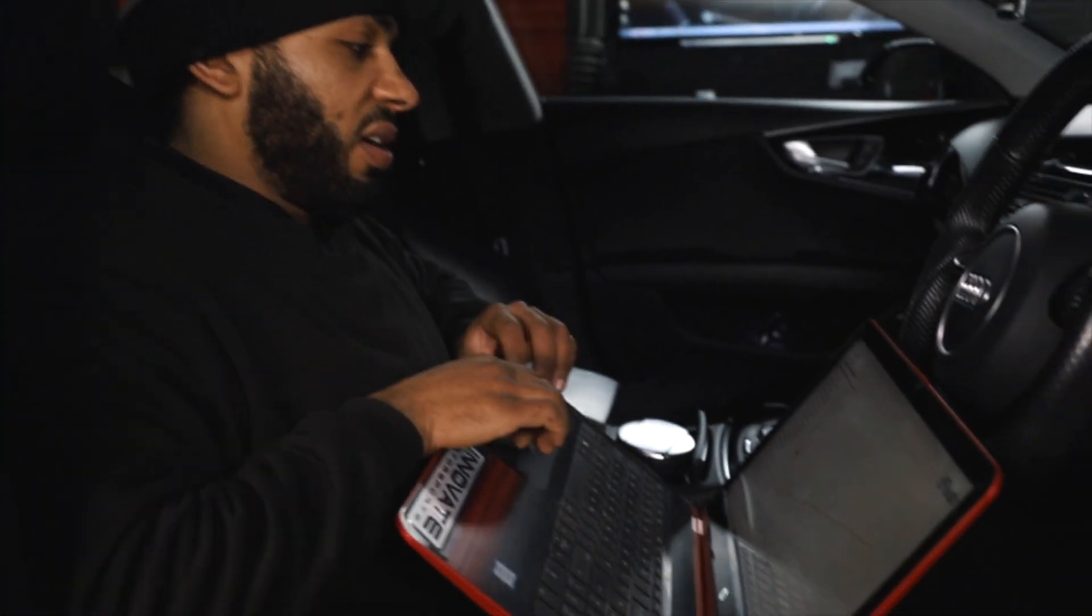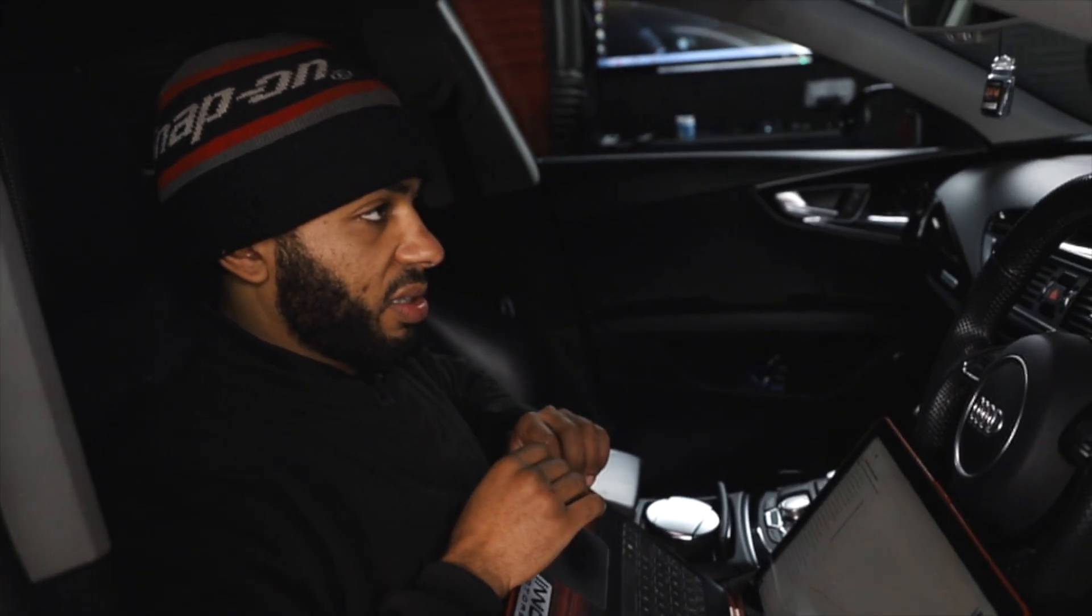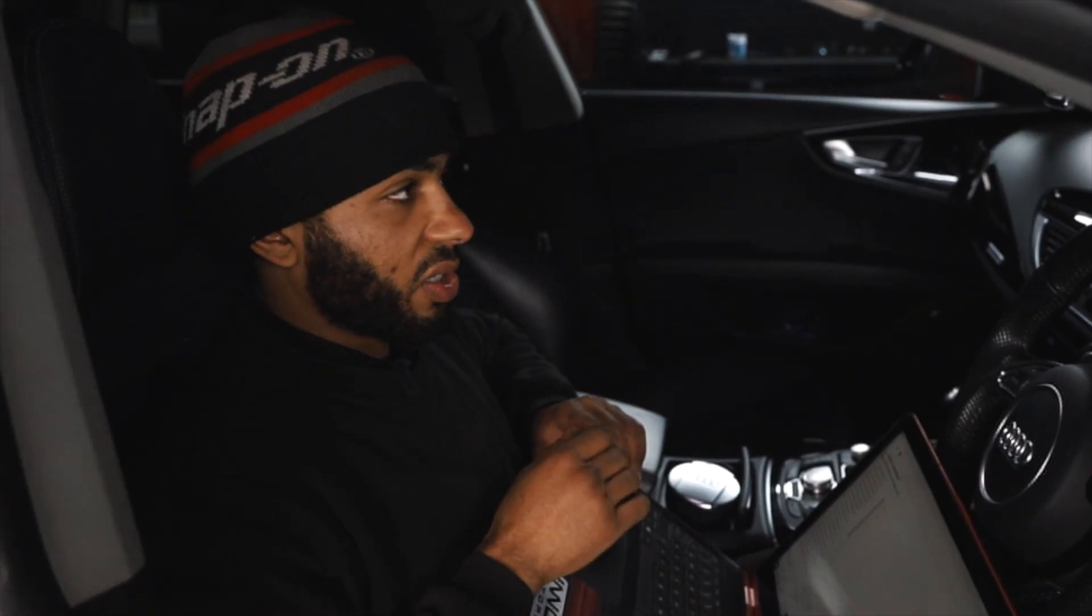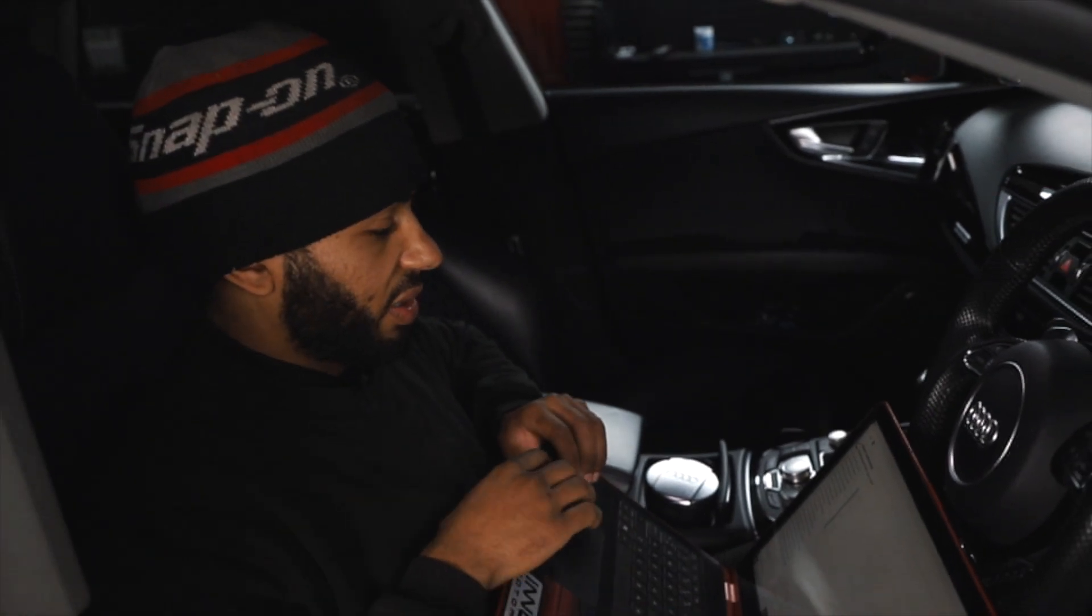Right, so with this being a non-performance pack RS7N, 552bhp standard, we've done the baseline runs in stock form. The car's made 554bhp and 545ft-lb of torque so it's basically making exactly stock power. We're just looking through the data logs now just to make sure that the boost control and fueling is all good and it's not pulling any ignition timing or anything like that.